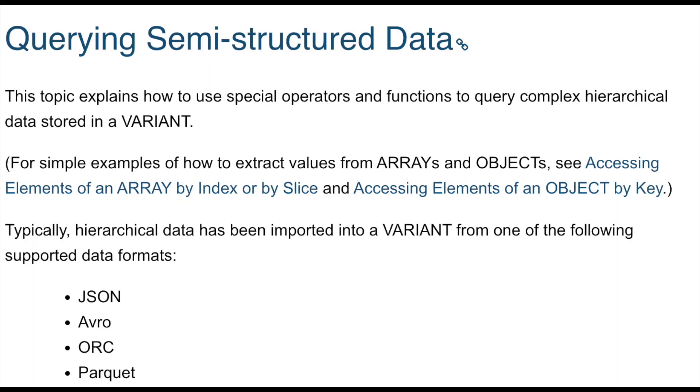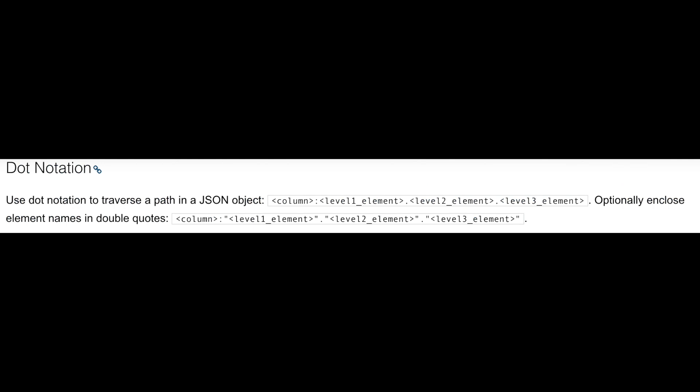Other areas to look into: unloading data — make sure you're clear on the COPY options when you unload data to an external stage. Also working with semi-structured data: querying JSON data using dot notation — just remember about case sensitivity. And finally on data engineering: if you run a MERGE SQL statement and you've got multiple source rows that join to a single target record, what would happen? What is the default behavior for Snowflake in that scenario?